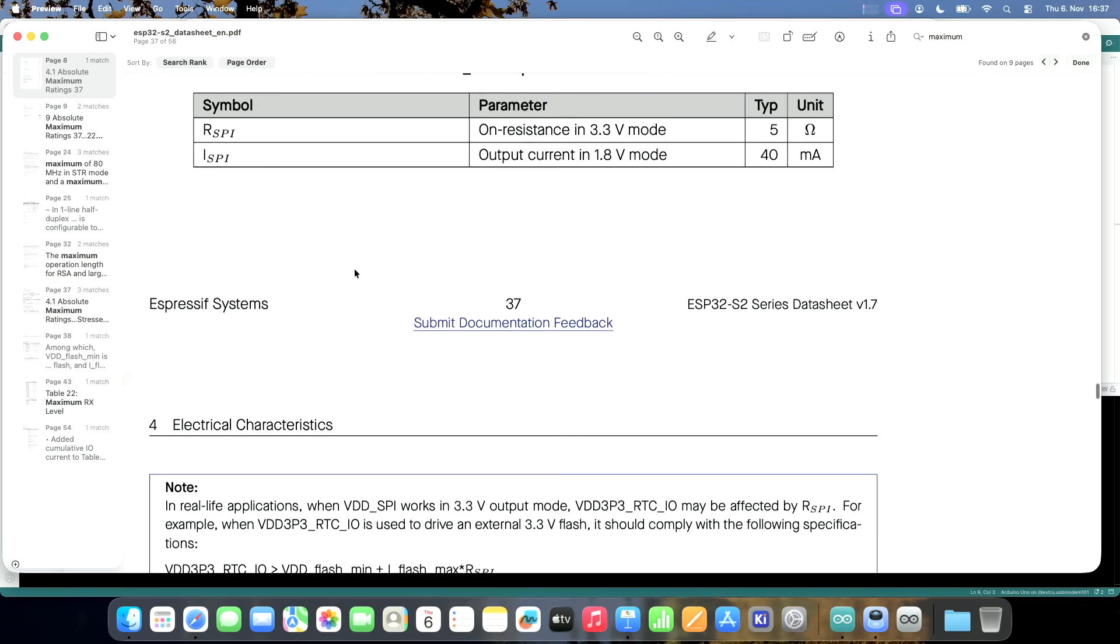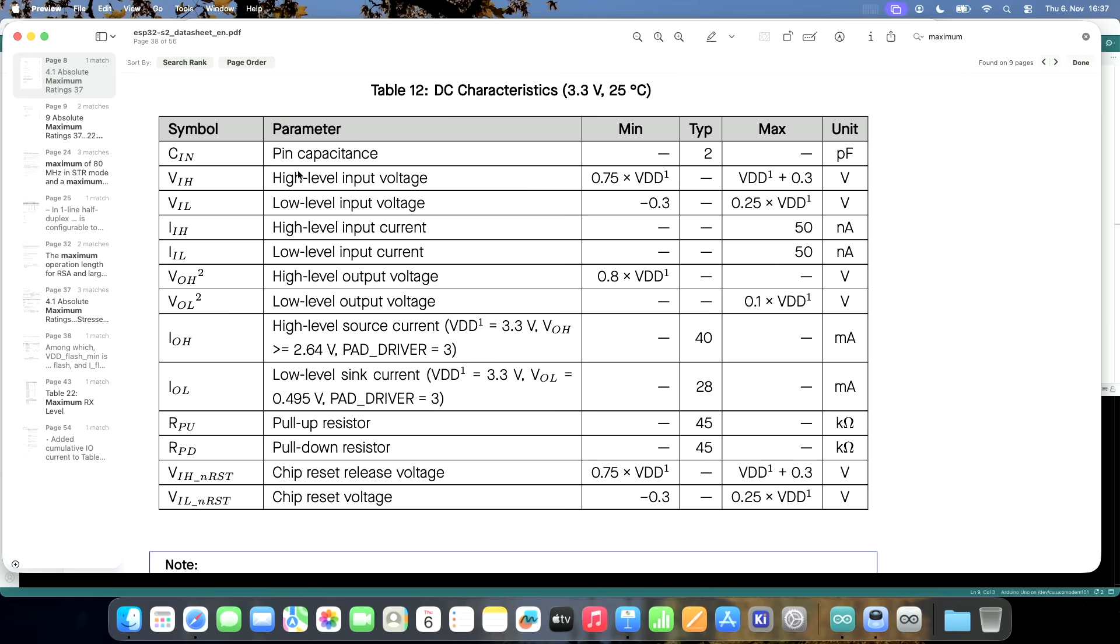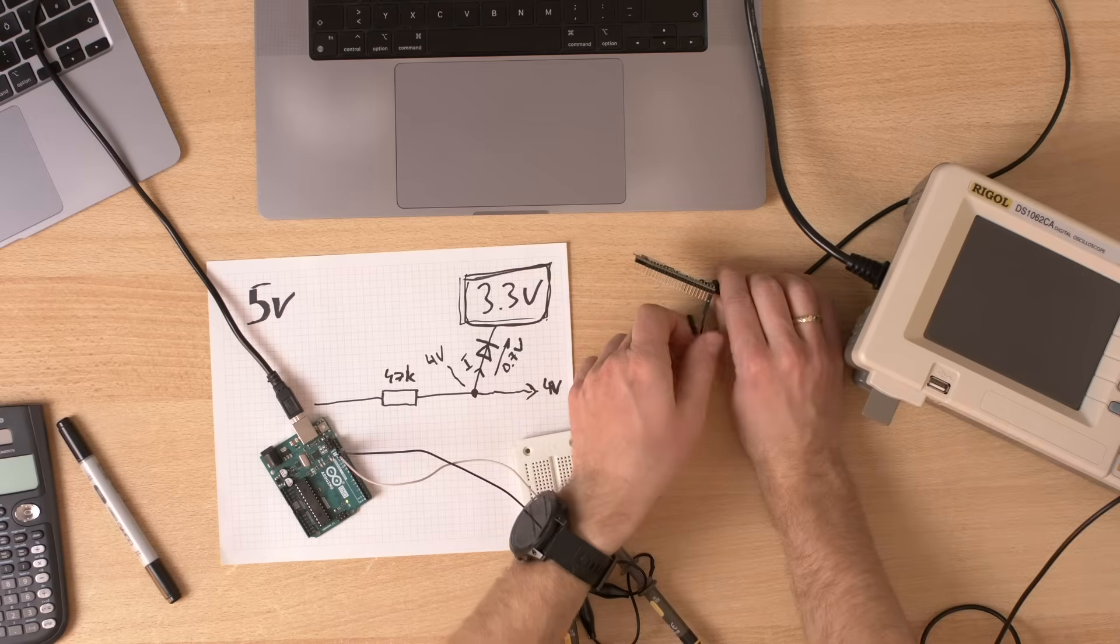What is the maximum rating here? High level input voltage. VDD plus 0.3. That would be 3.6. Not great. So I wouldn't do it like this. This might kill the ESP. Let's remove it. Now, if you have a very high frequency signal and you don't want to use much power on the pin, then the resistor solution might not work for you. And in this case,